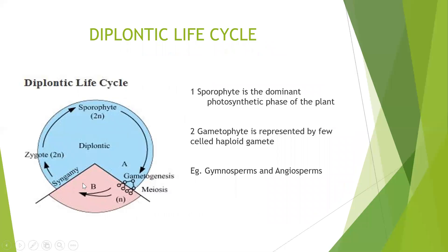The second life cycle is the diplontic life cycle. In the diplontic life cycle, the main plant body is diploid — that is, the sporophyte is dominant and it is the photosynthetic phase of the plant. The gametophytic part is represented only by the gamete, so it is a small phase where the gametes are dependent upon the sporophyte. This you can see in gymnosperms and angiosperms.